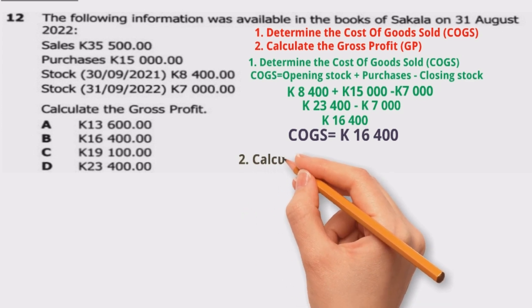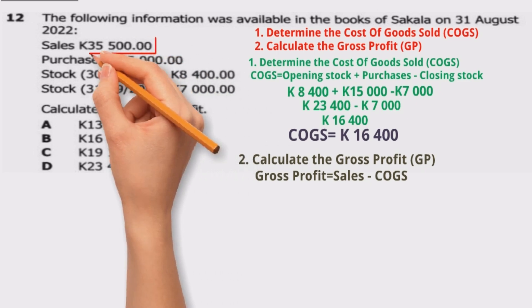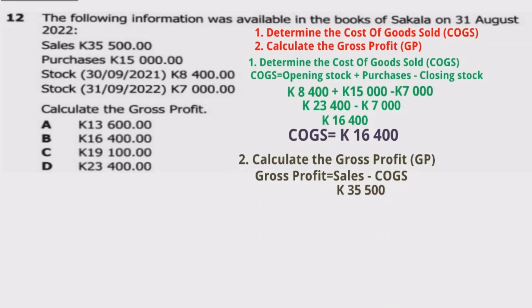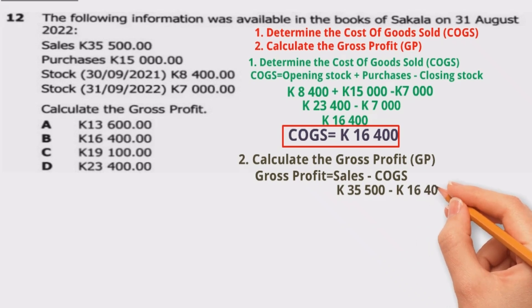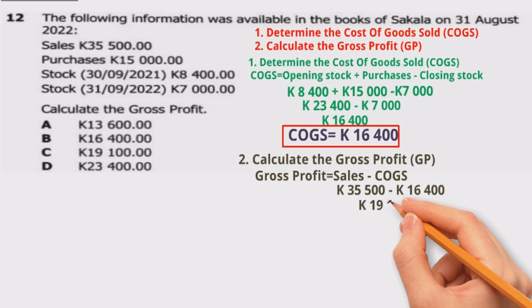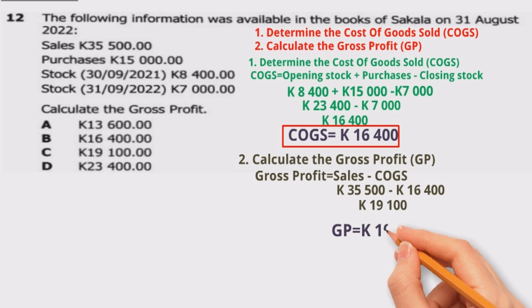Now we come to step two: calculate the gross profit, abbreviated GP. The formula is: gross profit = sales − cost of goods sold (COGS). Sales is 35,500 kwacha. So we write 35,500 kwacha minus 16,400 kwacha. Punching that into the calculator gives us 19,100 kwacha. Therefore, the gross profit is 19,100 kwacha.